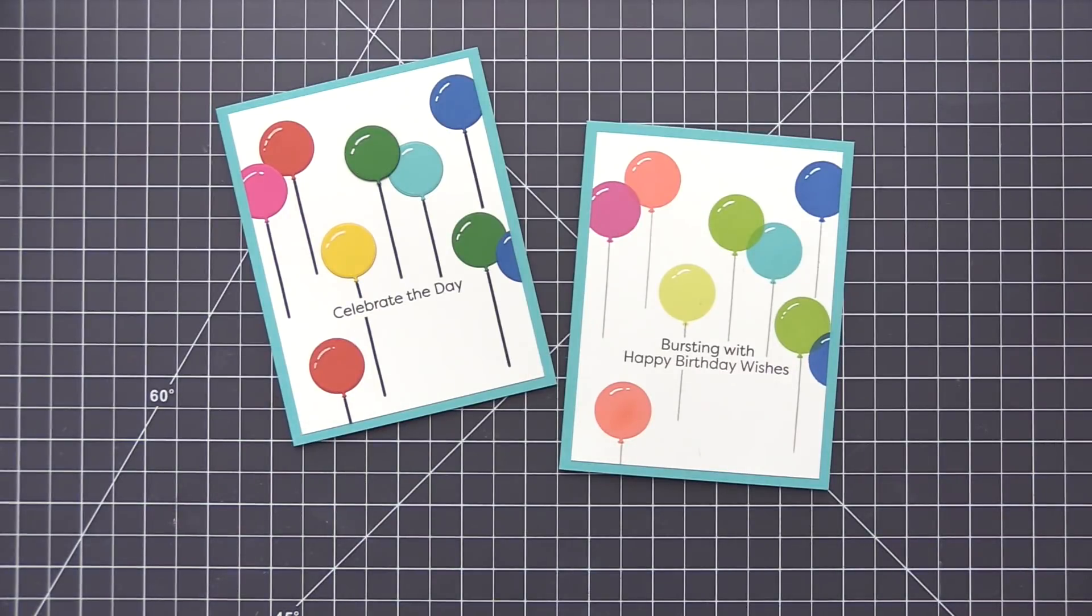You can see there with the stamped one I went with some lighter colors, and with the cardstock those are more bold, like primary type colors. I really love the overall look of both of them, but you can just see the variation that you can get by changing up both your cardstocks and your inks with the same design. And then I also changed the sentiment on that second card as well just to give it a little bit of a different look.